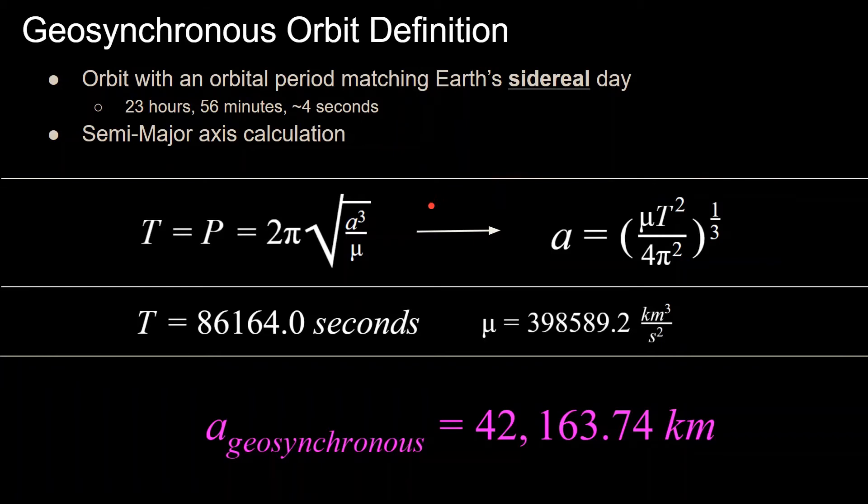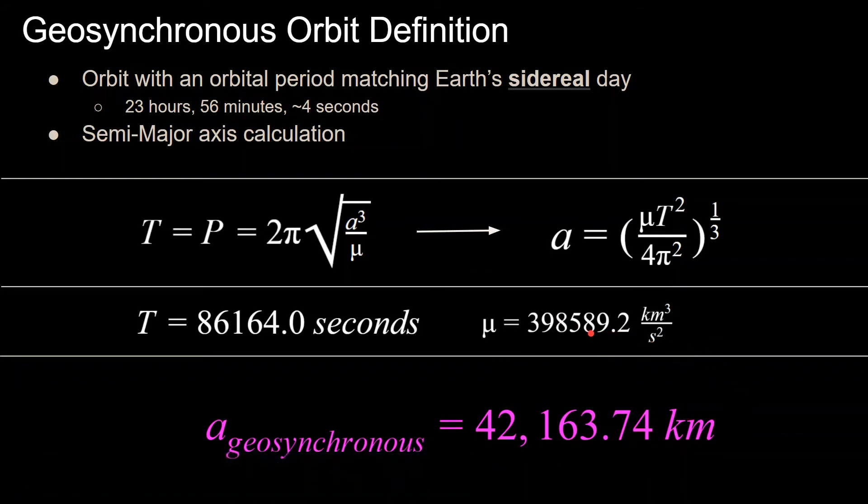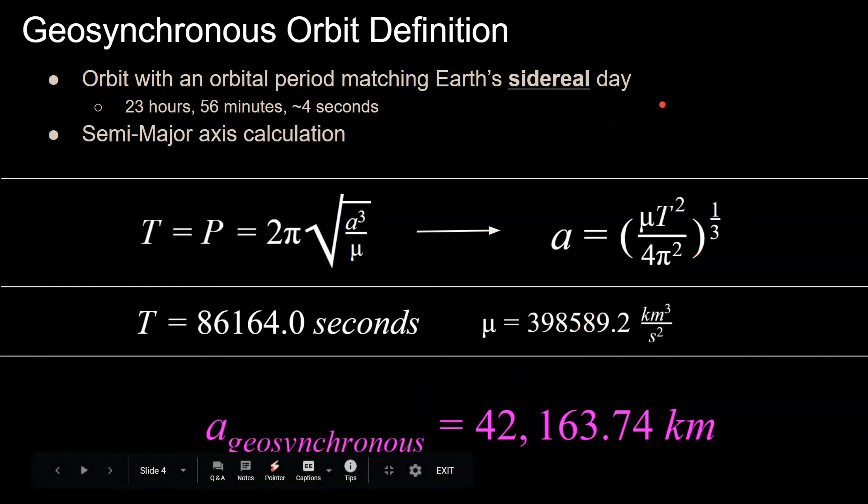It's useful to note that this is actually very far away from the Earth. The orbit of the International Space Station is anywhere between 6,000 and 7,000 kilometers, which is roughly the radius of the Earth plus anywhere between 300 and 500 kilometers. So going out to 42,000 kilometers is actually extremely far from the surface of the Earth.